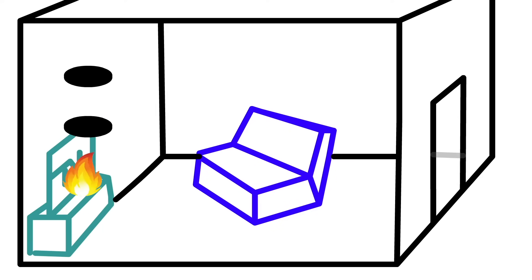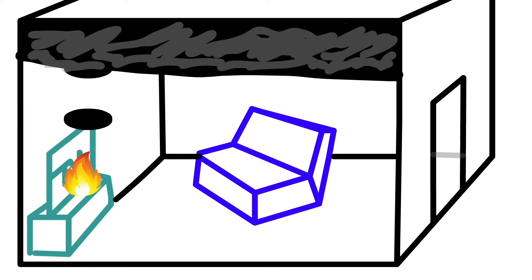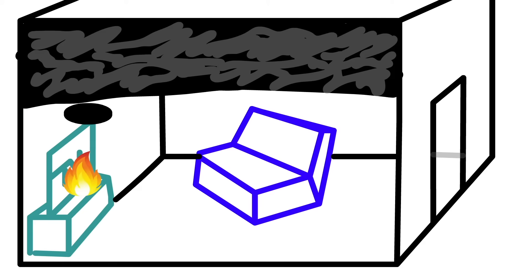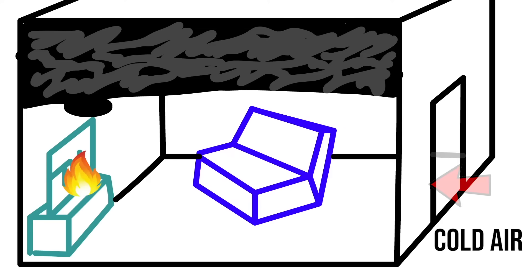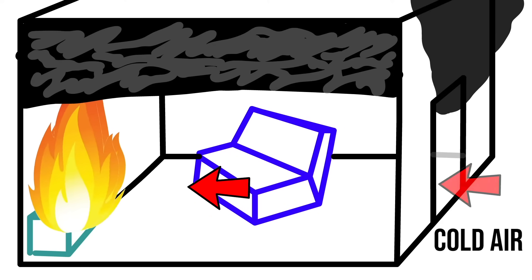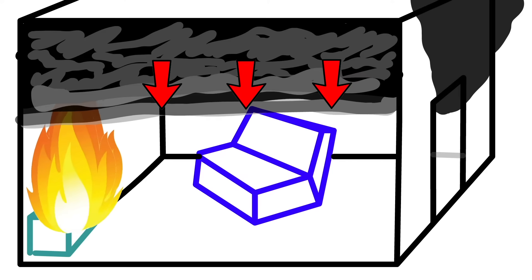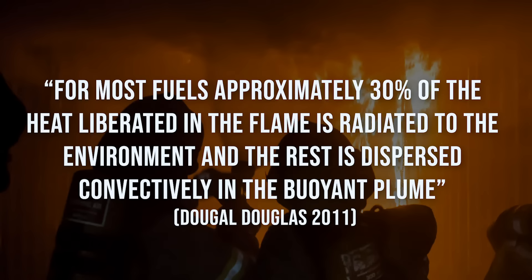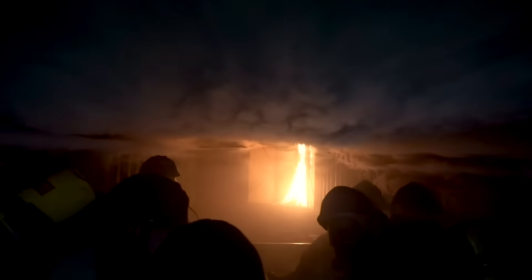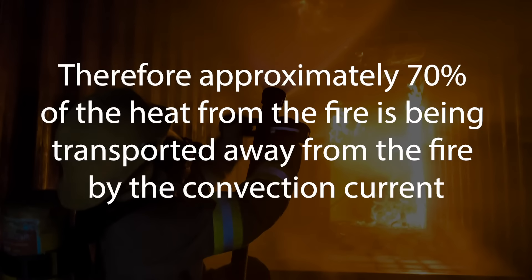The heat comes from the fire itself. As it burns, it pushes heat, smoke and flame into the overpressure area. By the process of convection, that heat spreads across the room and can start to move into other rooms. We see cold air drawn in through the door while smoke pushes out through the top. Approximately 30% of the heat liberated in the flame is radiated to the environment, while the remaining 70% is dispersed convectively in the buoyant plume — meaning 70% of the heat is transported up and away, available to heat other objects throughout the building.